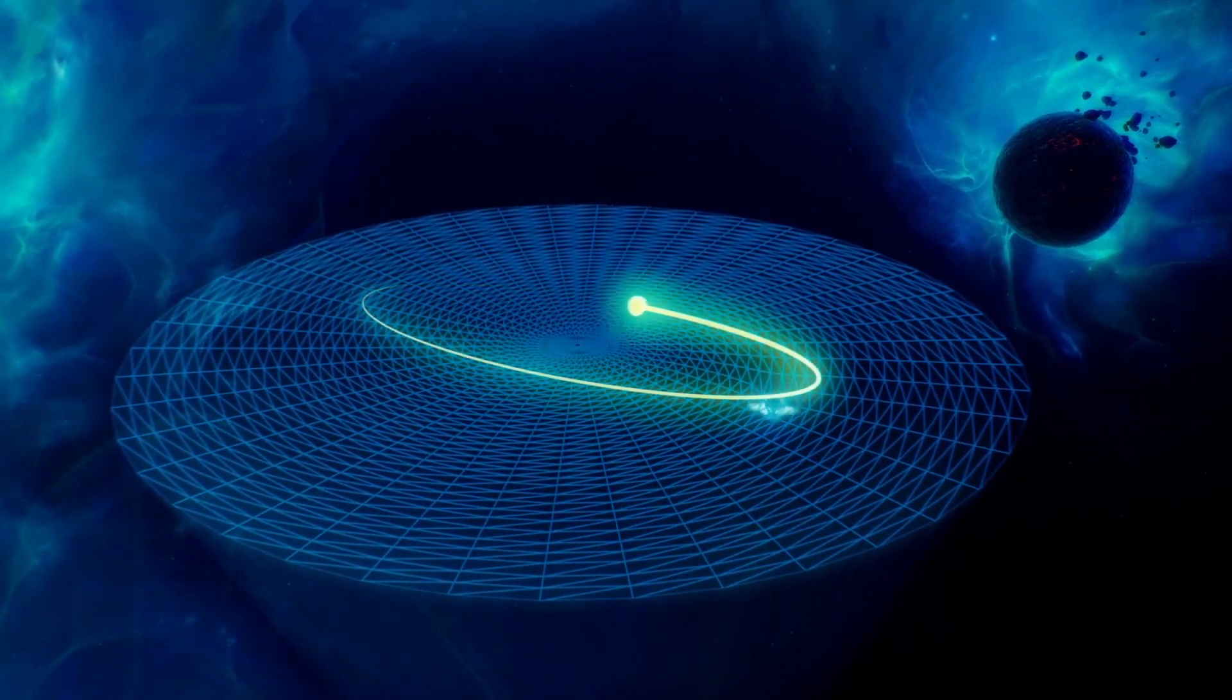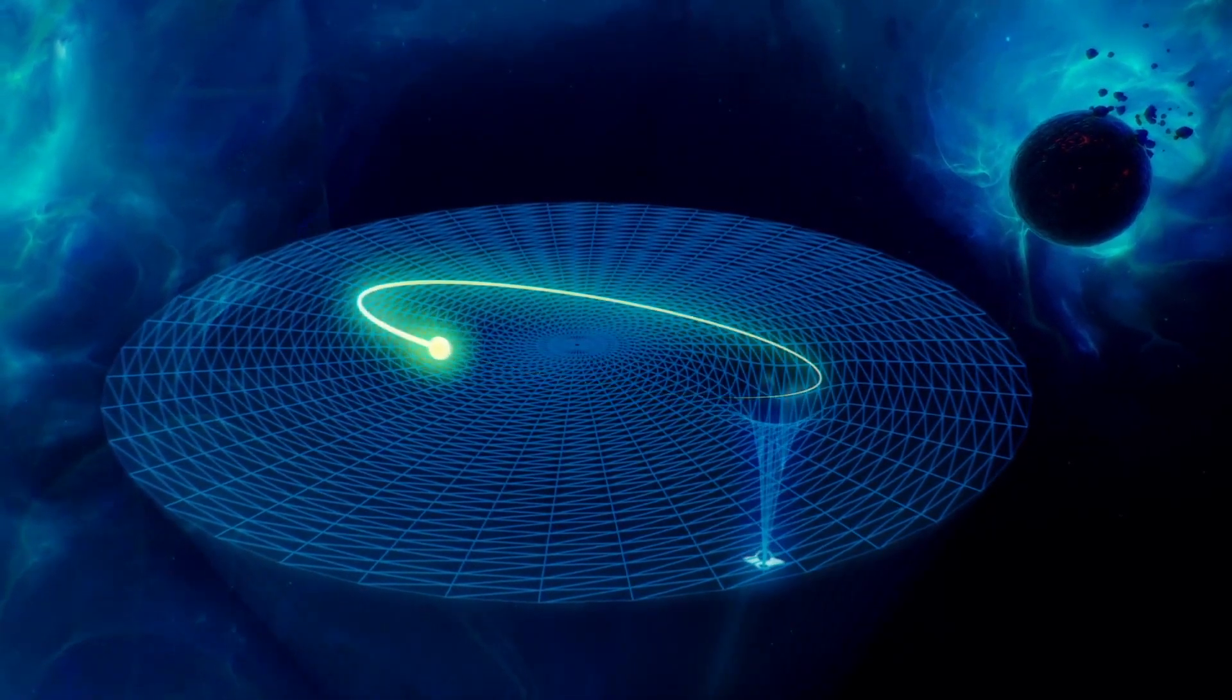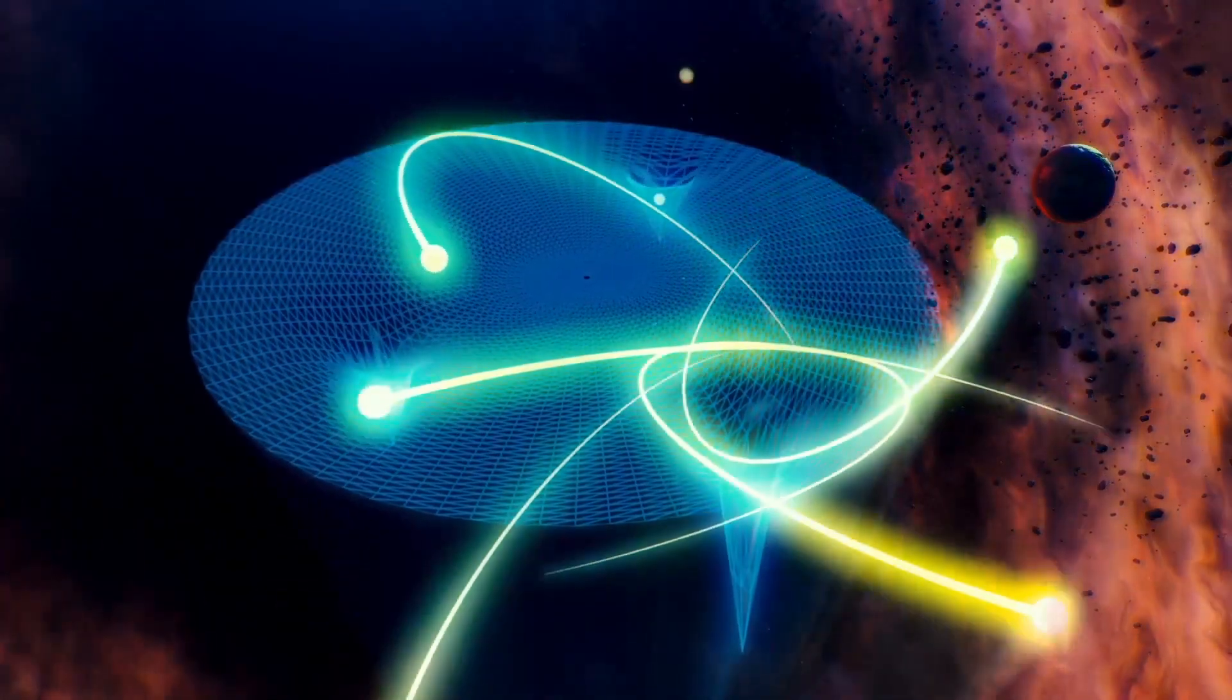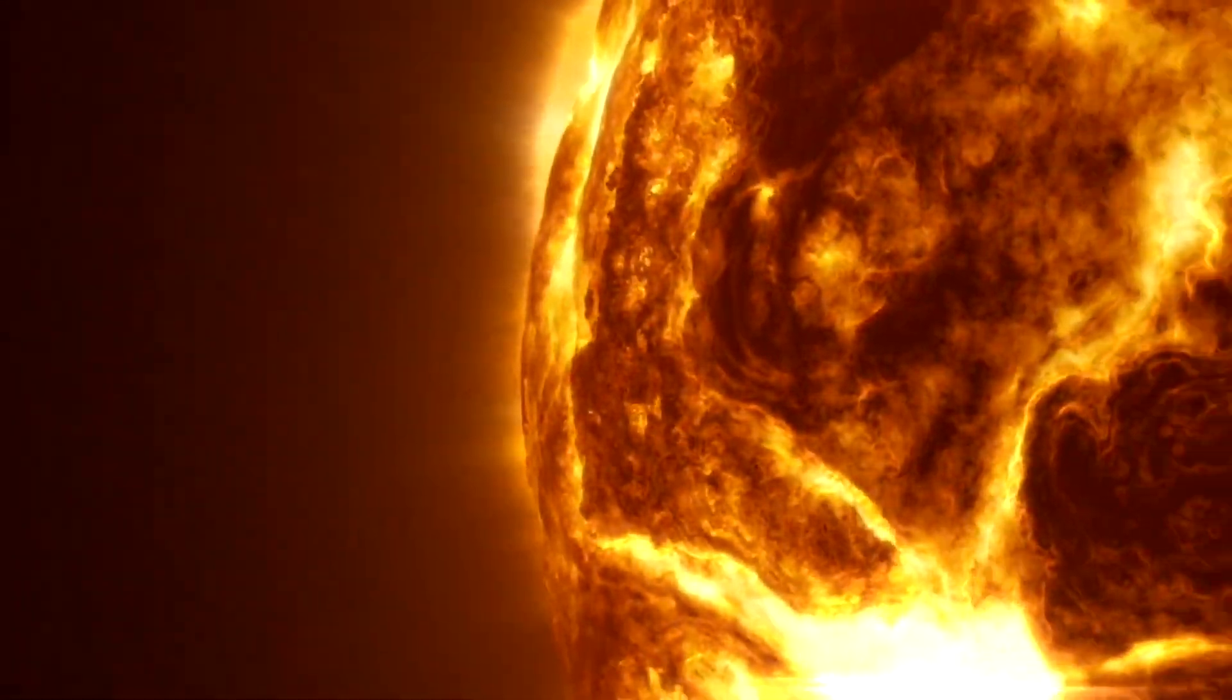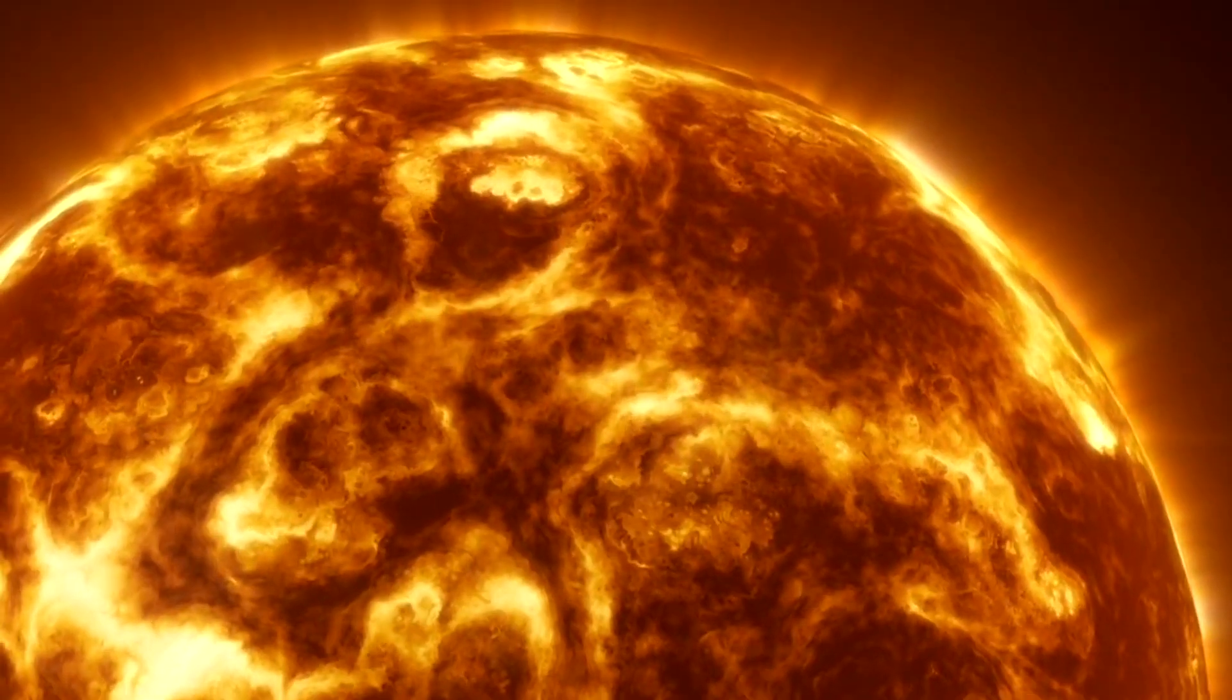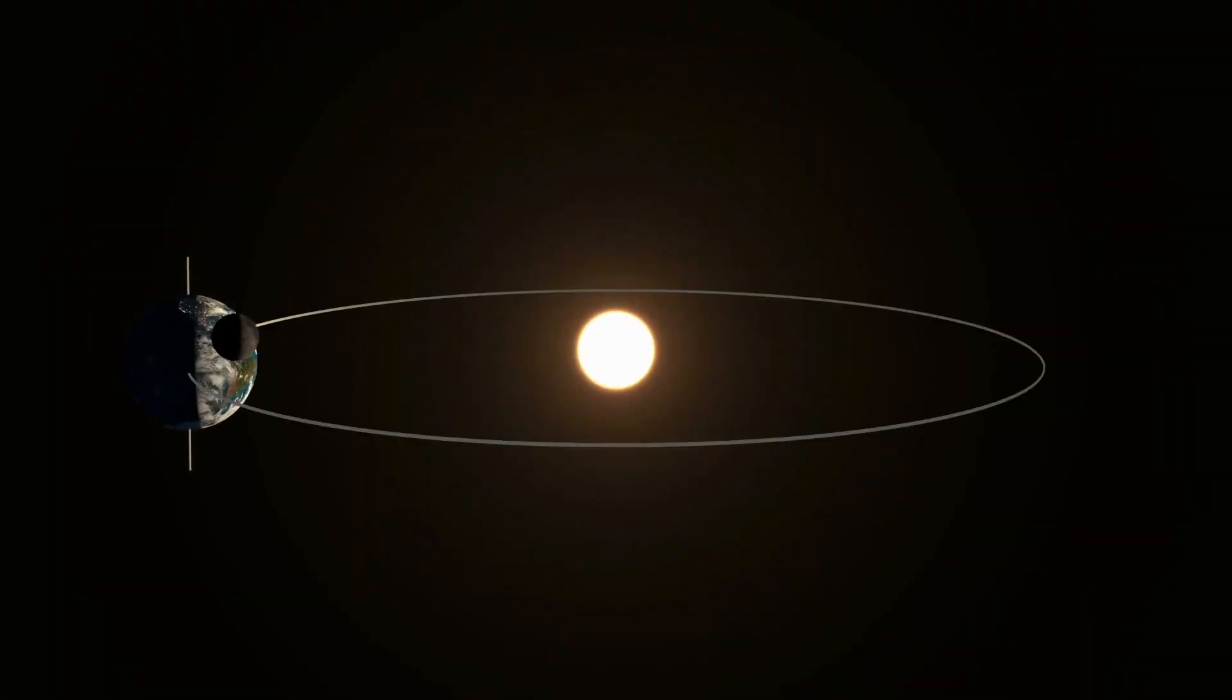According to this theory, when matter and energy are introduced into this space-time fabric, it bends, distorts, stretches, and contracts in response. To illustrate this concept, consider the example of the Sun. The massive spherical body of the Sun warps the surrounding space and time, causing what should be straight paths to curve. This is why light bends around the Sun, and the Earth orbits it as they travel through this curved space.